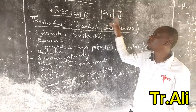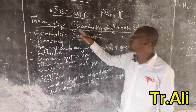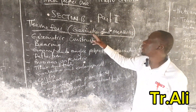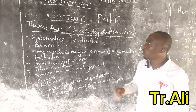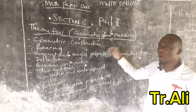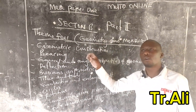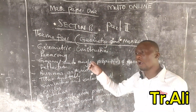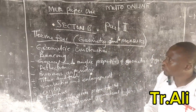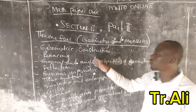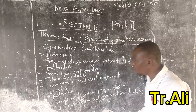So you are in Section B, Part 2, Theme 4. It is under metrics and measures. These are 18 topics where you are going to answer only one topic or one item. Let us first go through all of them.